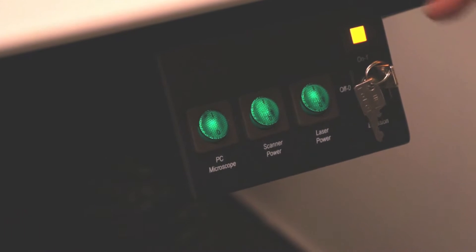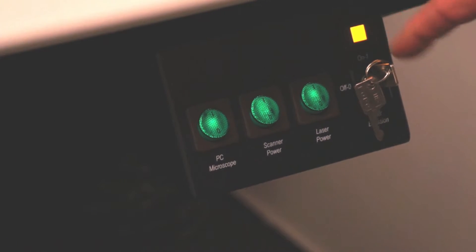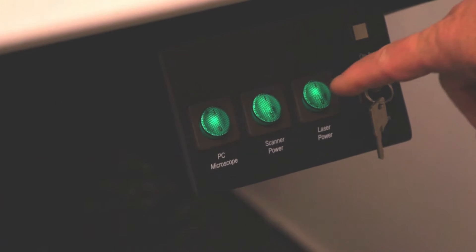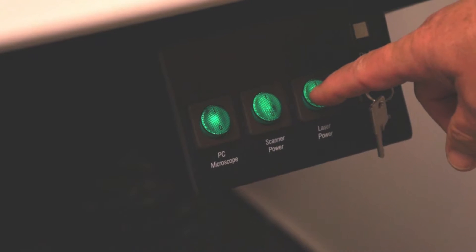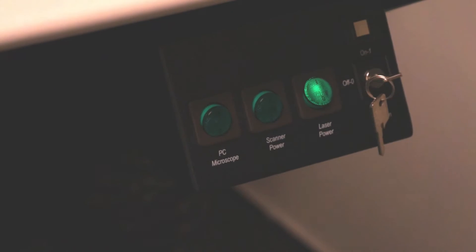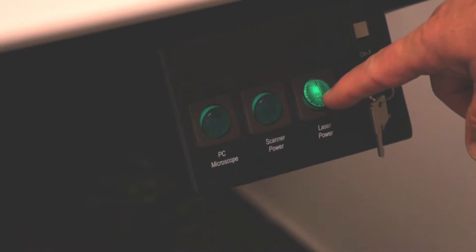The power down sequence for the microscope and the computer is as follows. Turn off the laser key. Skip the laser power button and turn off the scanner and the PC and the microscope. After 15 minutes, you can turn off the fan that's now cooling the lasers.